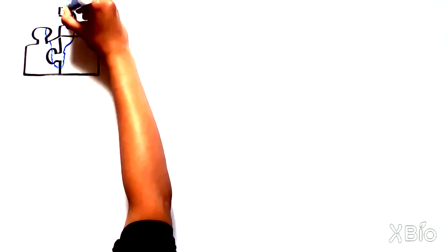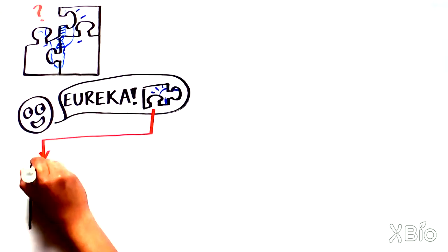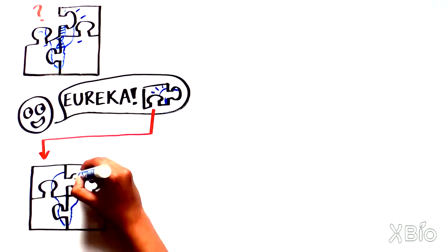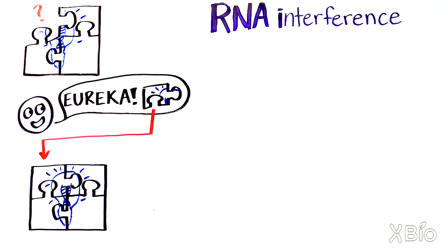Eureka moments are few and far between in the world of science. When they do happen, however, they can turn an entire field on its head. A compelling example is the discovery of RNA interference, or RNAi.